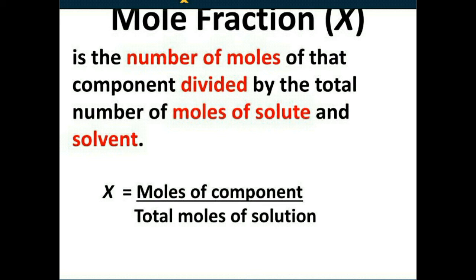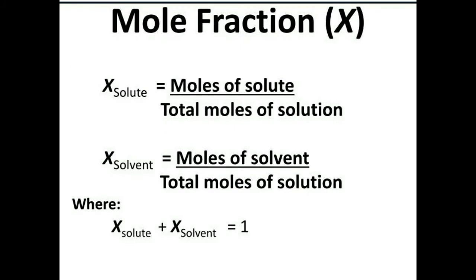Zeta is equivalent to moles of the component upon total moles of solution. Suppose there are two components in a solution, A and B, and we want to calculate the mole fraction of A. The formula is: moles of A upon total number of moles. Since there are two components, A and B, total moles = moles of A plus moles of B.